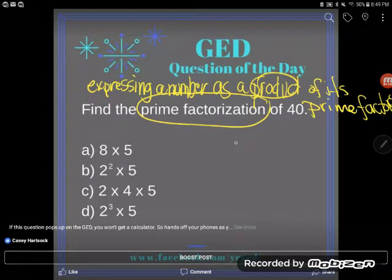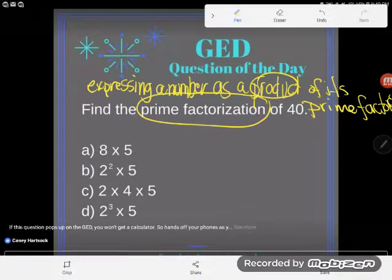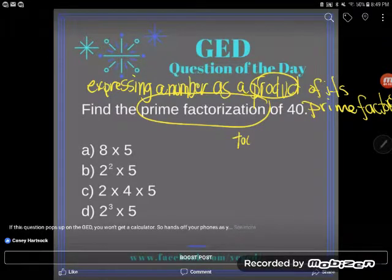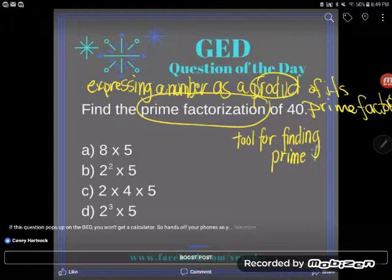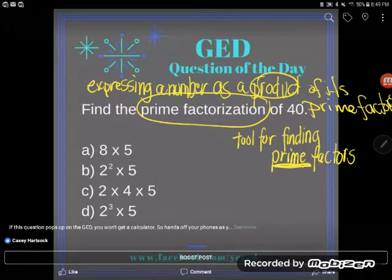Let me show you. First of all, before I can express something as a product of its prime factors, I better find out what its prime factors are. Best tool for finding prime factors that I know is what we call a factor tree. Some students mix up when to use the factor rainbow and when to use the factor tree.